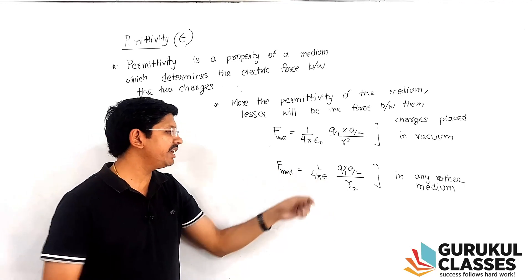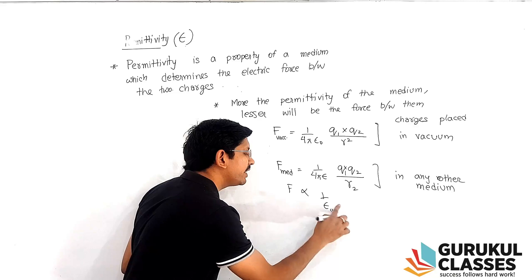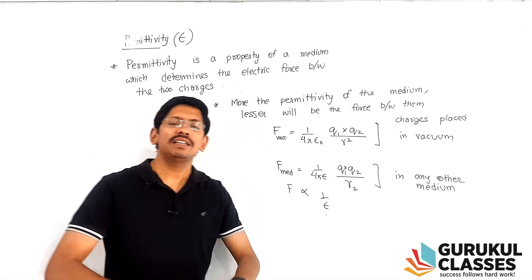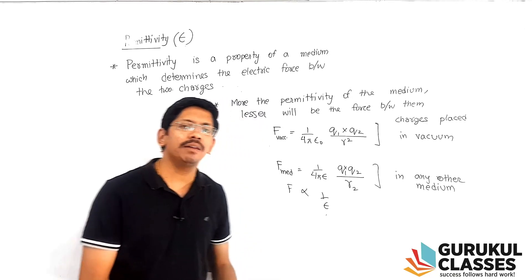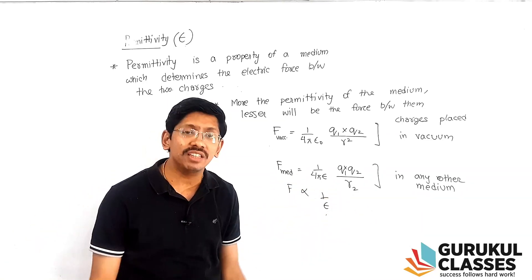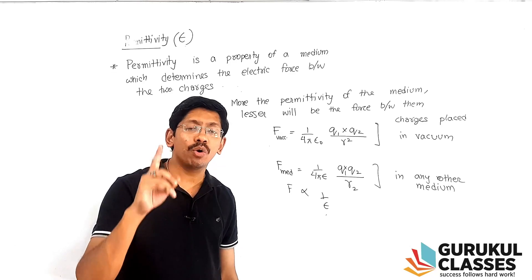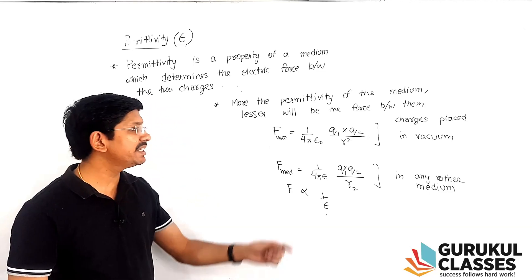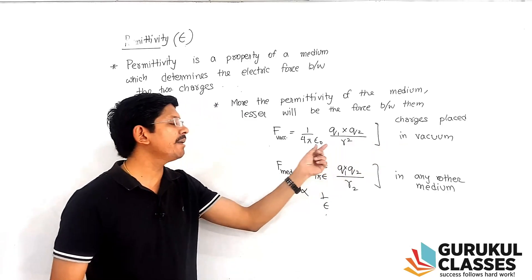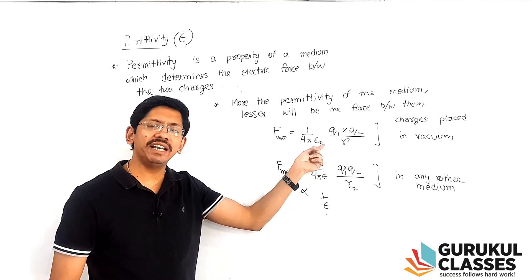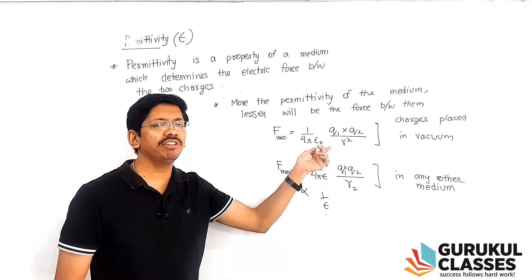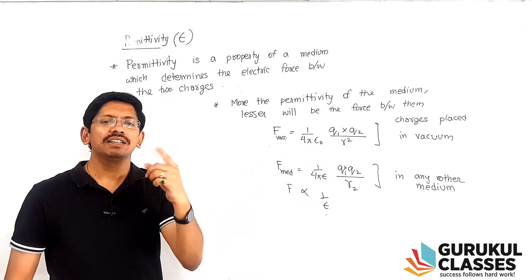Force between two charges is inversely proportional to the permittivity of that medium — greater the permittivity, lesser the force between them. Apart from epsilon, there is another quantity called the dielectric constant that also decides how much force acts in a given medium. The absolute permittivity of vacuum is 8.854 × 10⁻¹² and different mediums have different permittivity values.